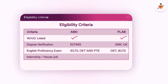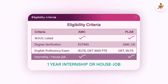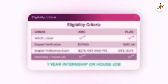Another usually overlooked point is about completing internship or house job before appearing in any of these exams. For AMC Provisional Registration or for PLAB GMC Registration, you must have completed one year of internship or house job in your home country or in the country from where you obtained your medical degree.